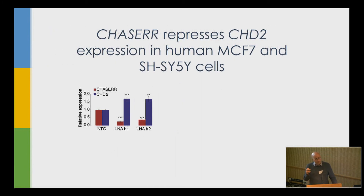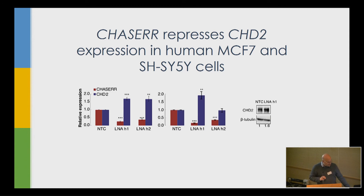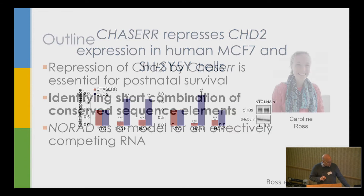Importantly, this is conserved in human cells — knocking down Chaser leads to increased CHD2 expression. This is potentially clinically relevant: haploinsufficiency or heterozygous mutations in CHD2 cause epilepsy and autism. Here, at least theoretically, we have a means to increase CHD2 expression in these individuals by knocking down Chaser, and this is something we are now testing further.